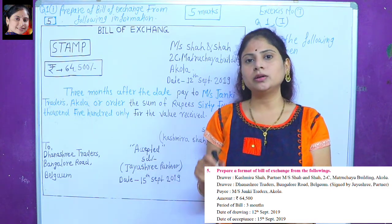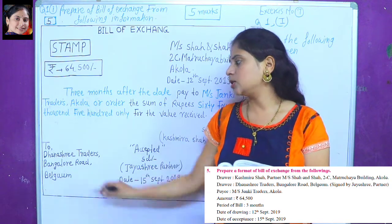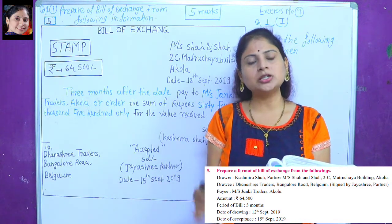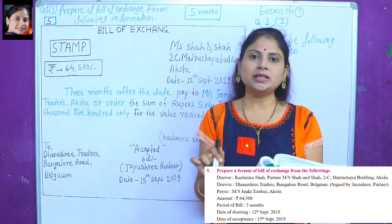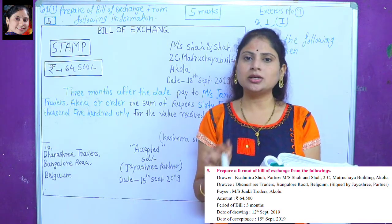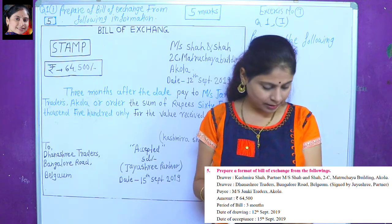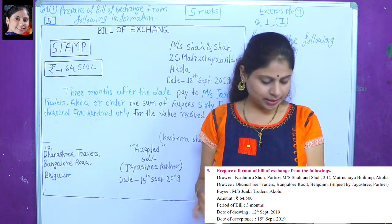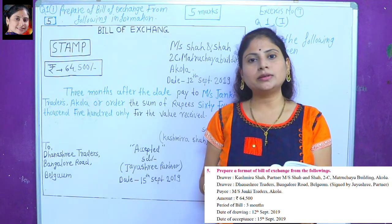If the person accepts, the partner has a name. If you accept the partner, you will sign on the JST. If you have a name, you will have to give it a name. Pay Mrs. Shah and Shah, the Traders, the full amount. The bill will be drawn.